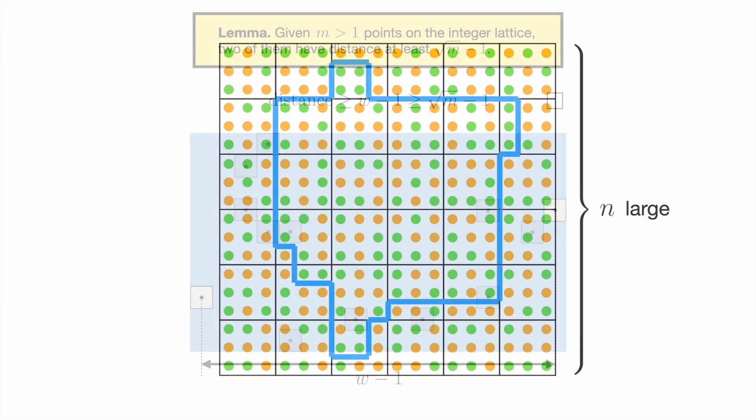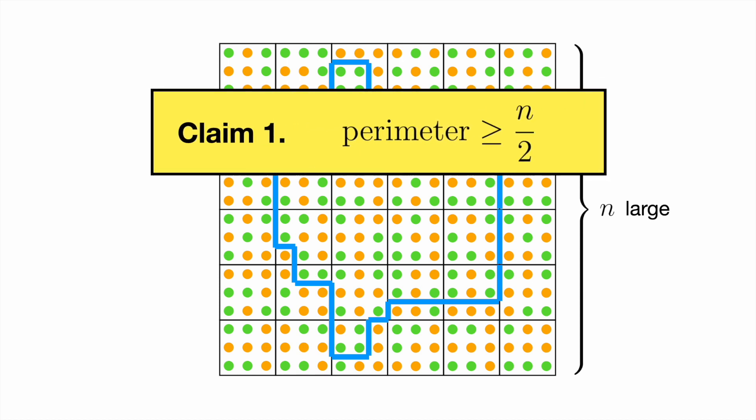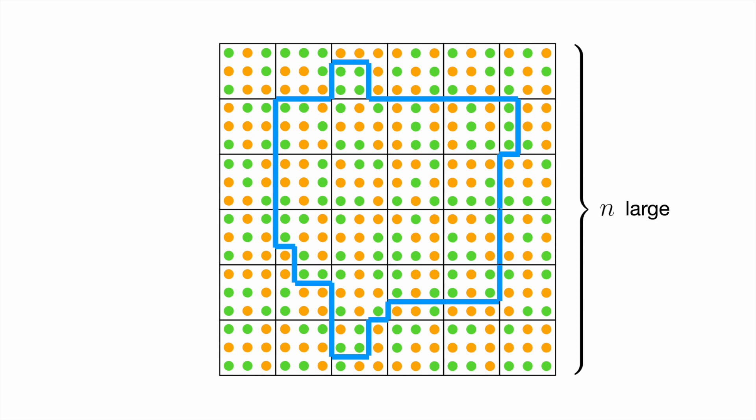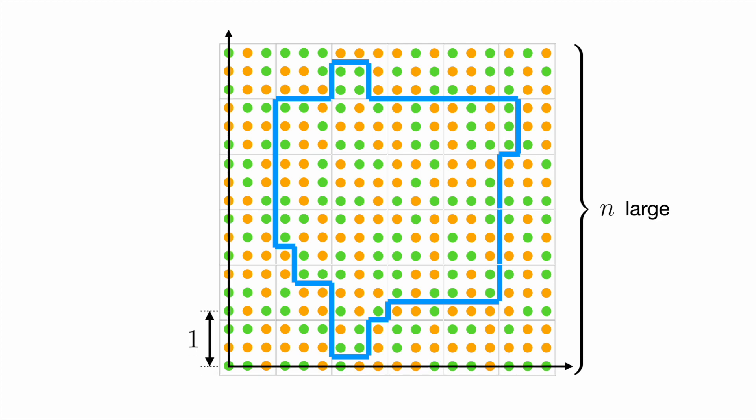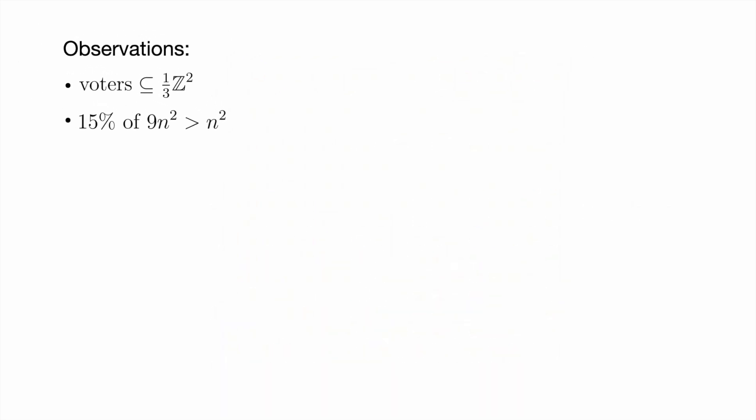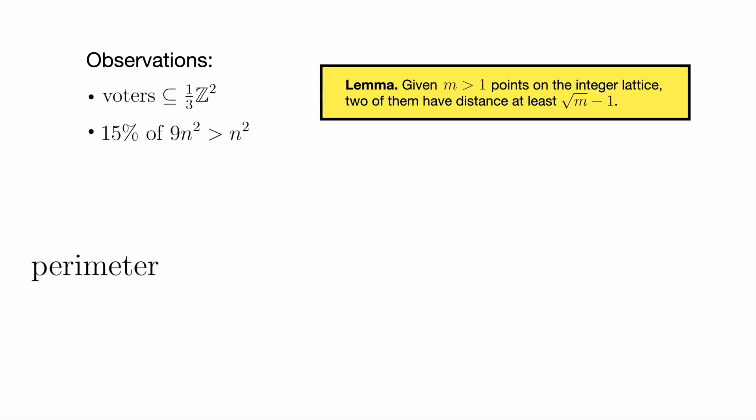This lemma is the main ingredient in our proof of claim 1. To see how it's relevant, recall that we arranged voters into 3 by 3 grids across an n by n grid of unit squares. This means our voters reside in a version of the integer lattice that's been shrunk by a factor of 3. Also, since 15% of these voters reside in the district, it follows that the district contains more than n-squared voters. We combine these observations with our lemma to bound the perimeter. First, given two points in the district, then we can think of the boundary of the district as a rubber band to see that the perimeter is at least twice the distance between those points. Our lemma gives a lower bound on this distance, and we get an even simpler bound since n is large. This proves claim 1.